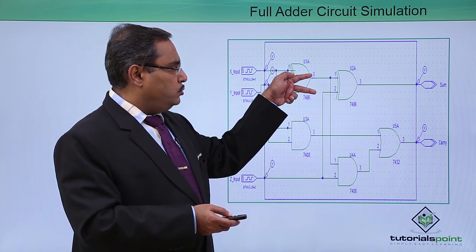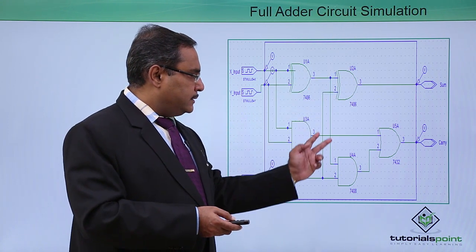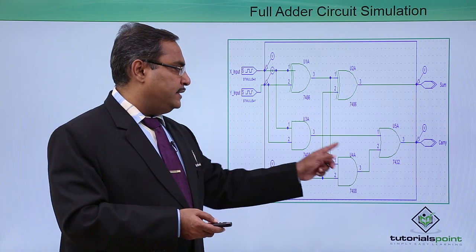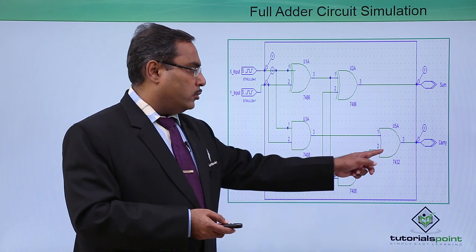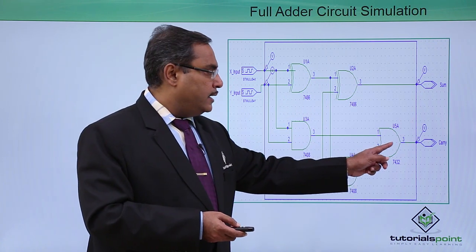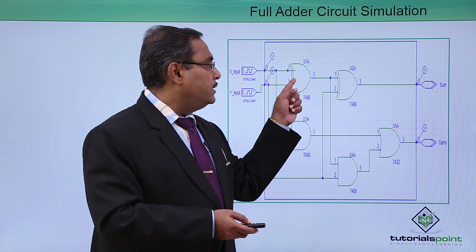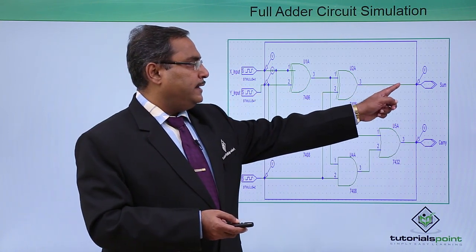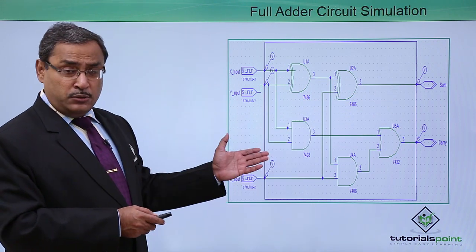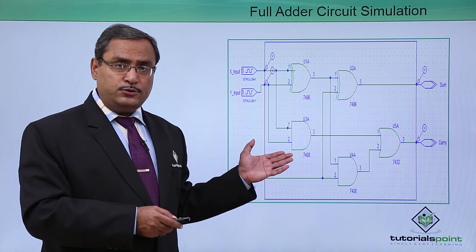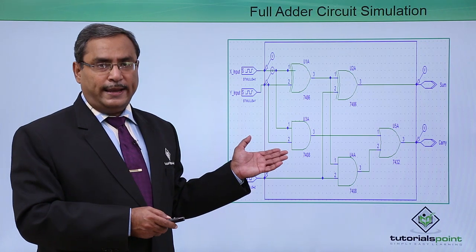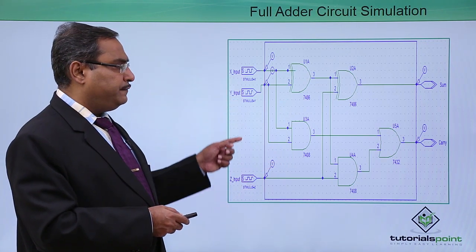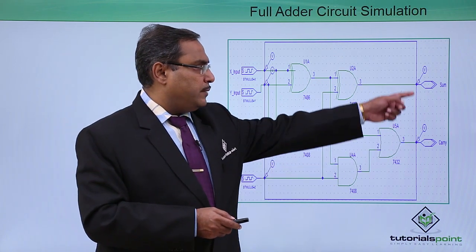That is another half adder. The 2 inputs are going to the XOR gate, and the same 2 inputs will be going to the AND gate. These 2 AND gate outputs will be OR-ed through this particular IC, and here we will be getting the carry. The XOR output is X XOR Y XOR Z, giving us the sum. Here we have implemented the full adder using 2 half adders and 1 external OR gate. These are the respective inputs and outputs.